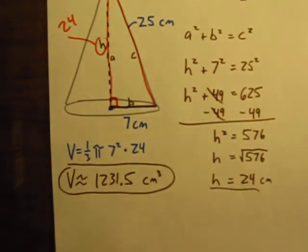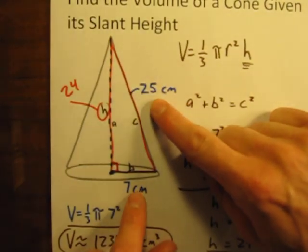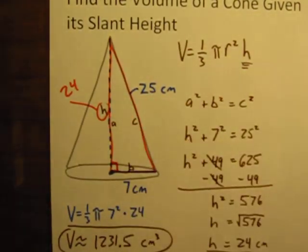So that is what you'll do to calculate the volume of a cone when given the slant height rather than the regular height.